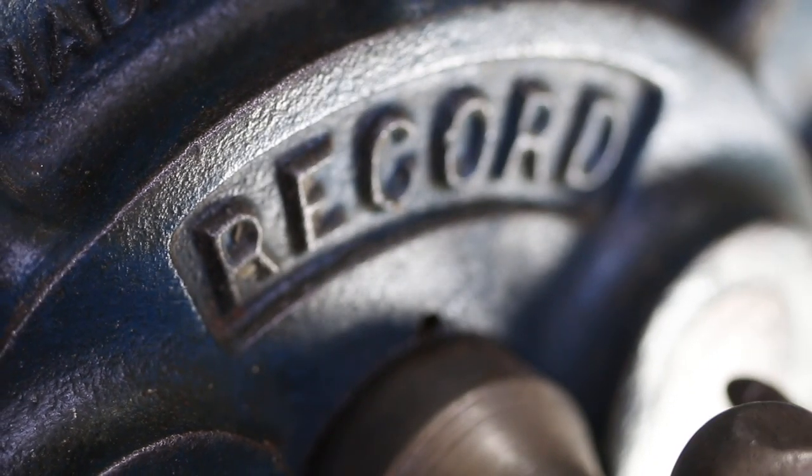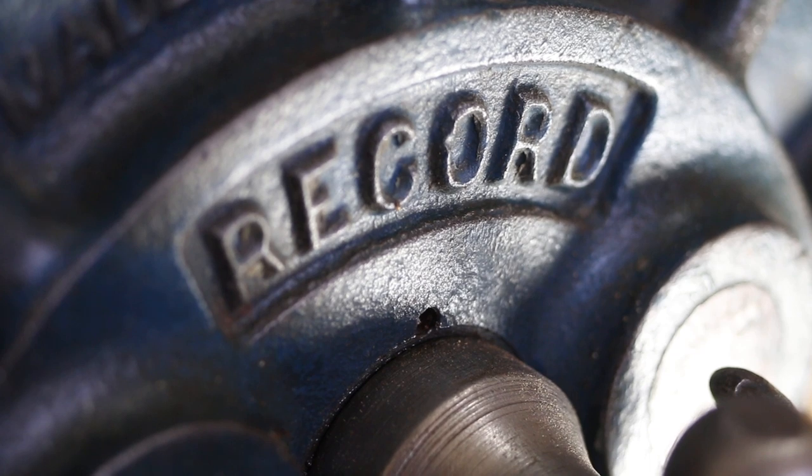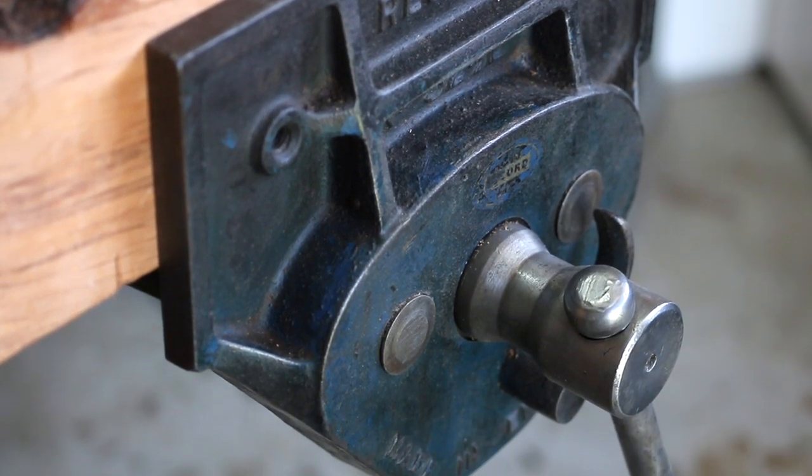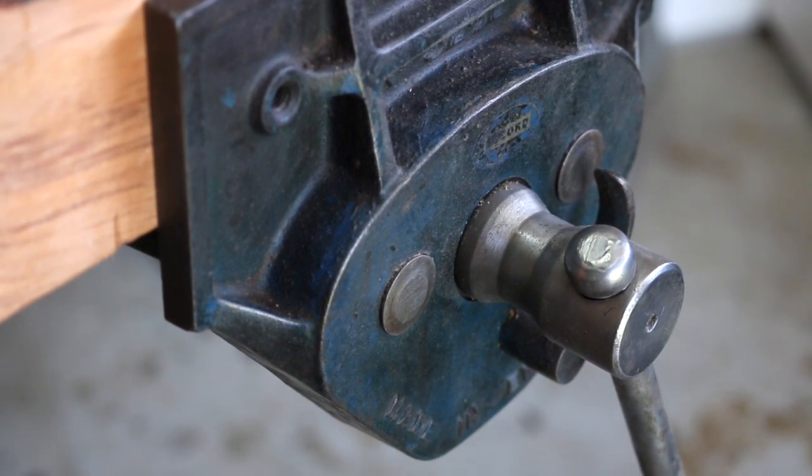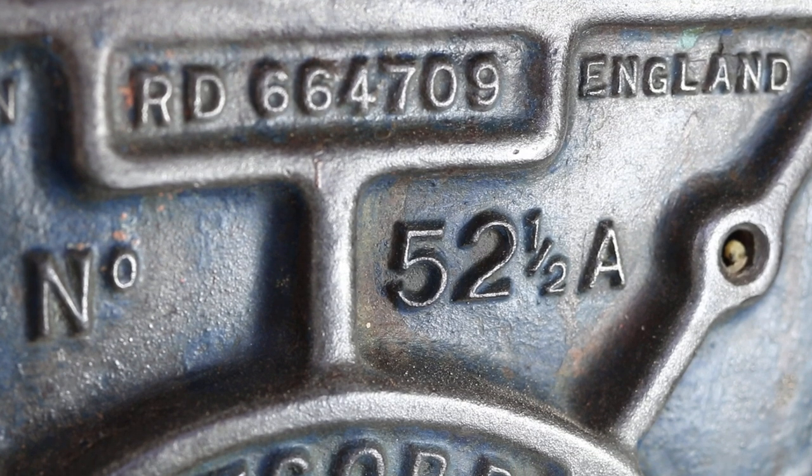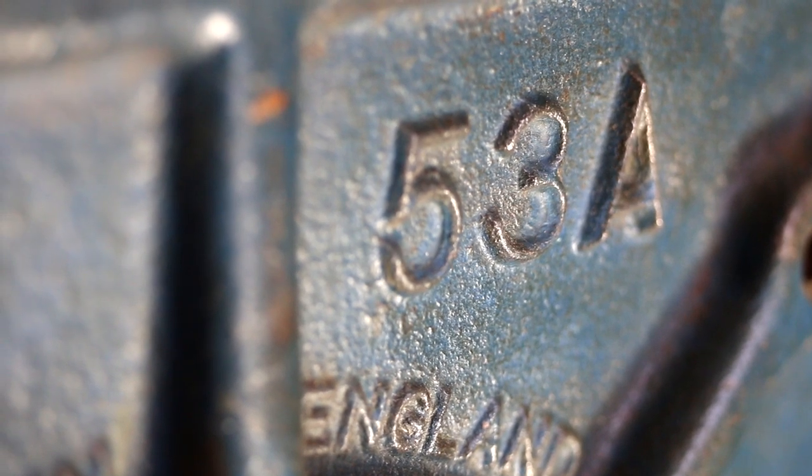Record. It's the name you think of when you need to secure a piece of wood to your workbench. Perhaps the greatest record model number in woodworking history is the 52 and a half. It was the largest woodworking vise that Record produced, unless of course you've got the 53, which is a little bit larger, but potatoes, potatoes.